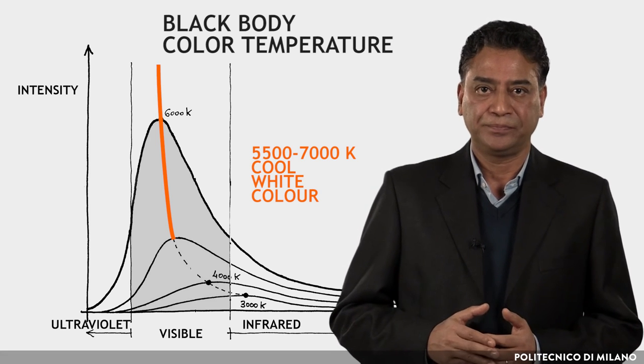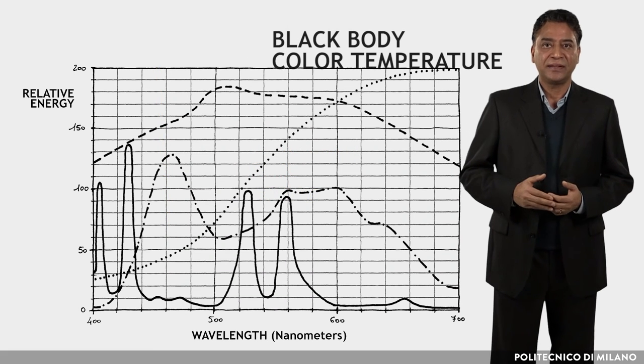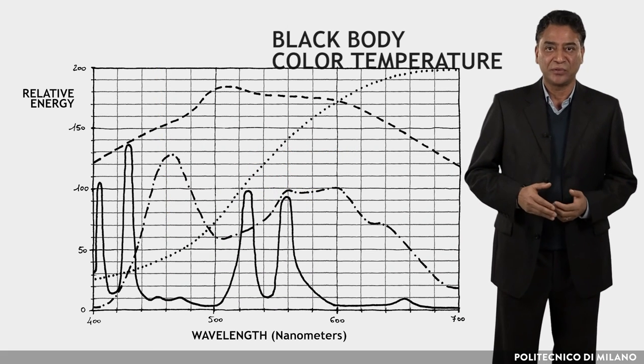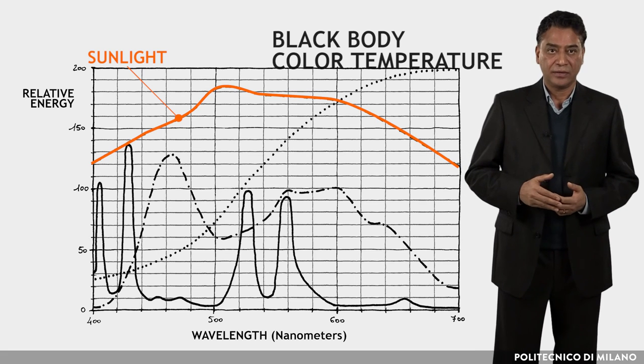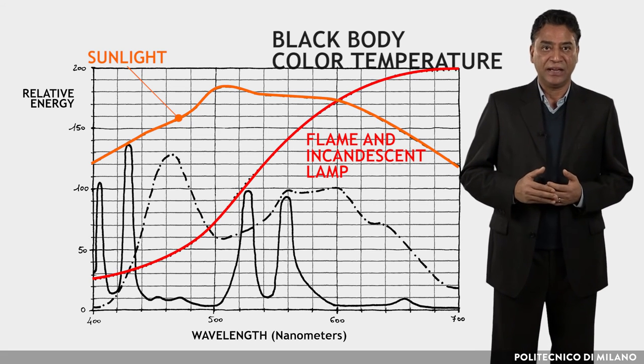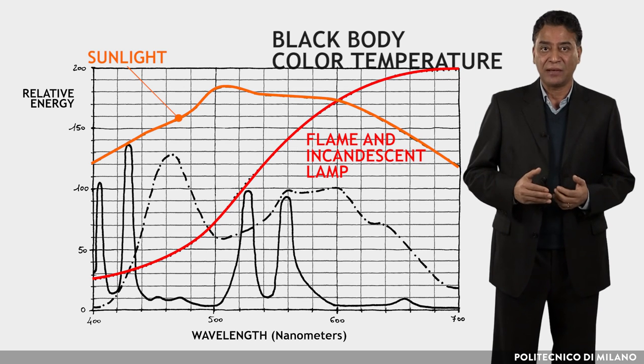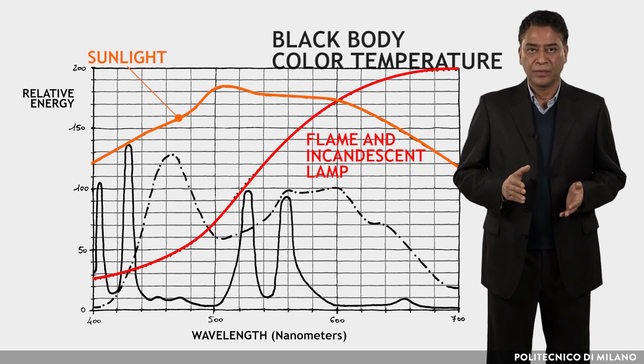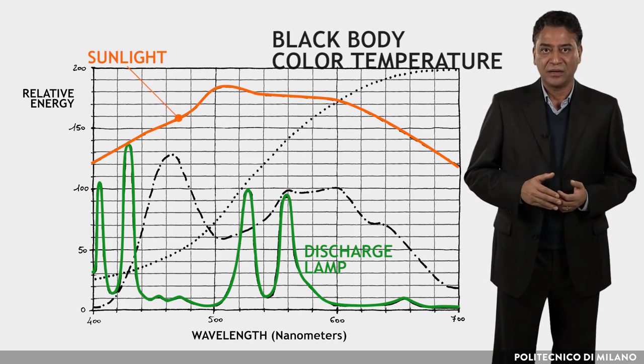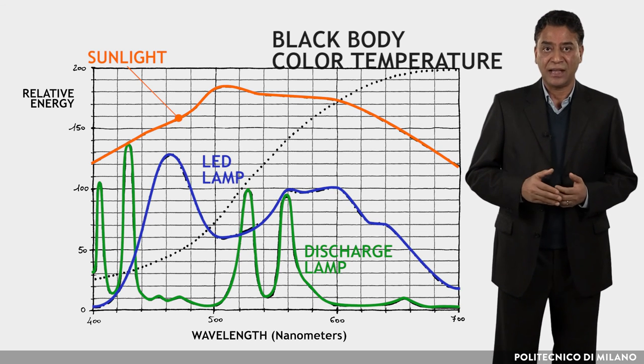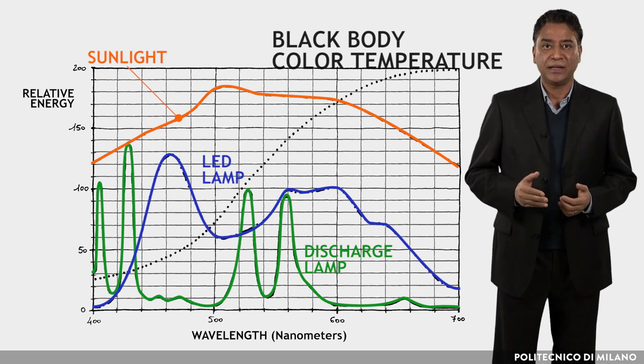The black body is the reference by which one judges a light source that emits in a similar way, as shown in the figure. Flame and incandescent lamps, for example, have a continuous spectrum. The spectrum of a discharge lamp, mercury vapor, fluorescent, or of an LED lamp instead is different in shape from that of a black body.